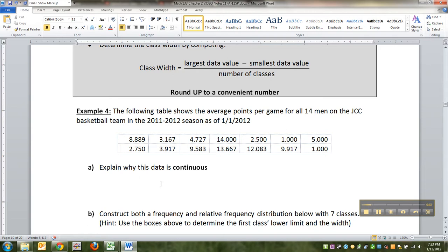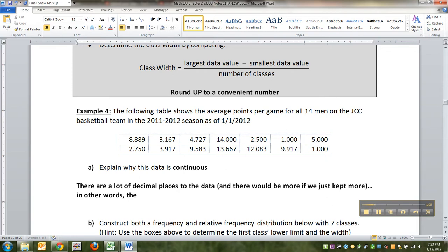The long and the short of it is there are a lot of decimal places to the data, and there would be more if we just kept more. In other words, the data were rounded. Data is a plural noun. Data were rounded to three decimal places.